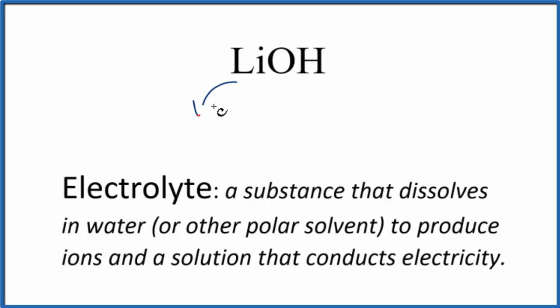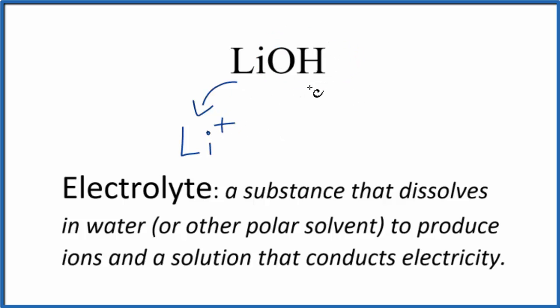We'll get Li+. Lithium is in group one on the periodic table, so it forms one-plus ions. And then the hydroxide ion — that will be OH with a negative charge. That's a good one to remember.